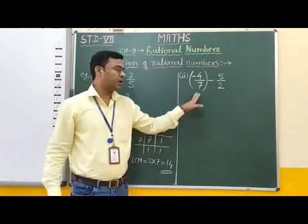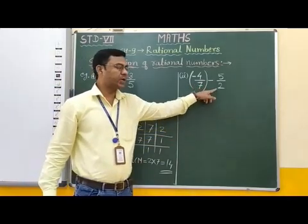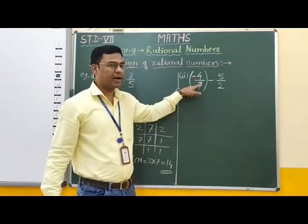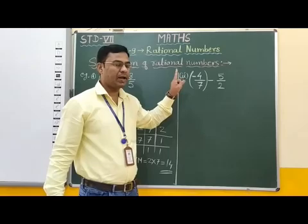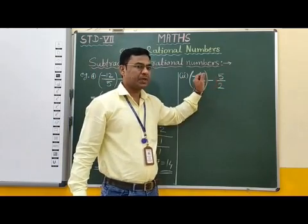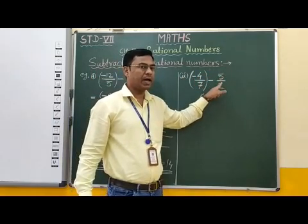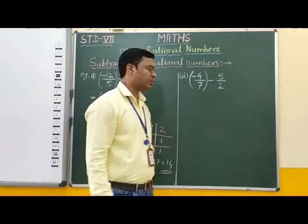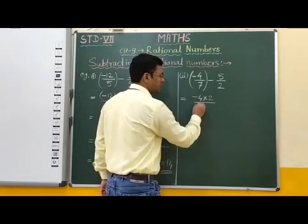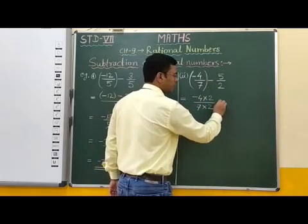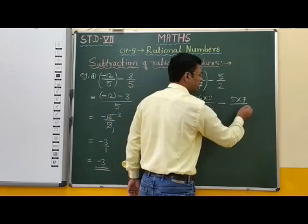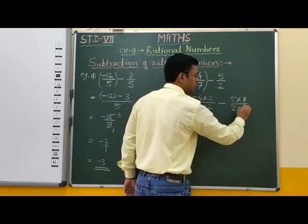Now students, we have to write equivalent rational numbers of these two rational numbers with denominator 14. If we multiply the numerator and denominator of the first rational number by 2, we get denominator 14. And in the second rational number, if we multiply the numerator and denominator by 7, we get denominator 14. Therefore we can write: minus 4 multiplied by 2 over 7 multiplied by 2, minus sign, then numerator and denominator multiplied by 7.